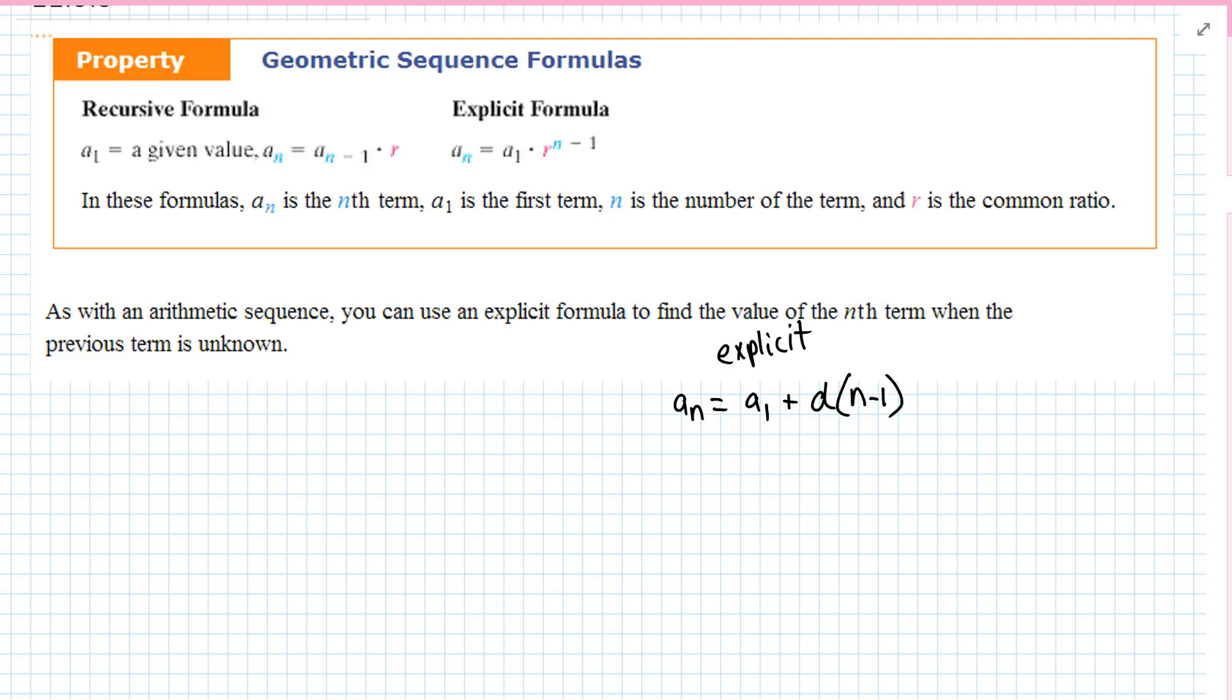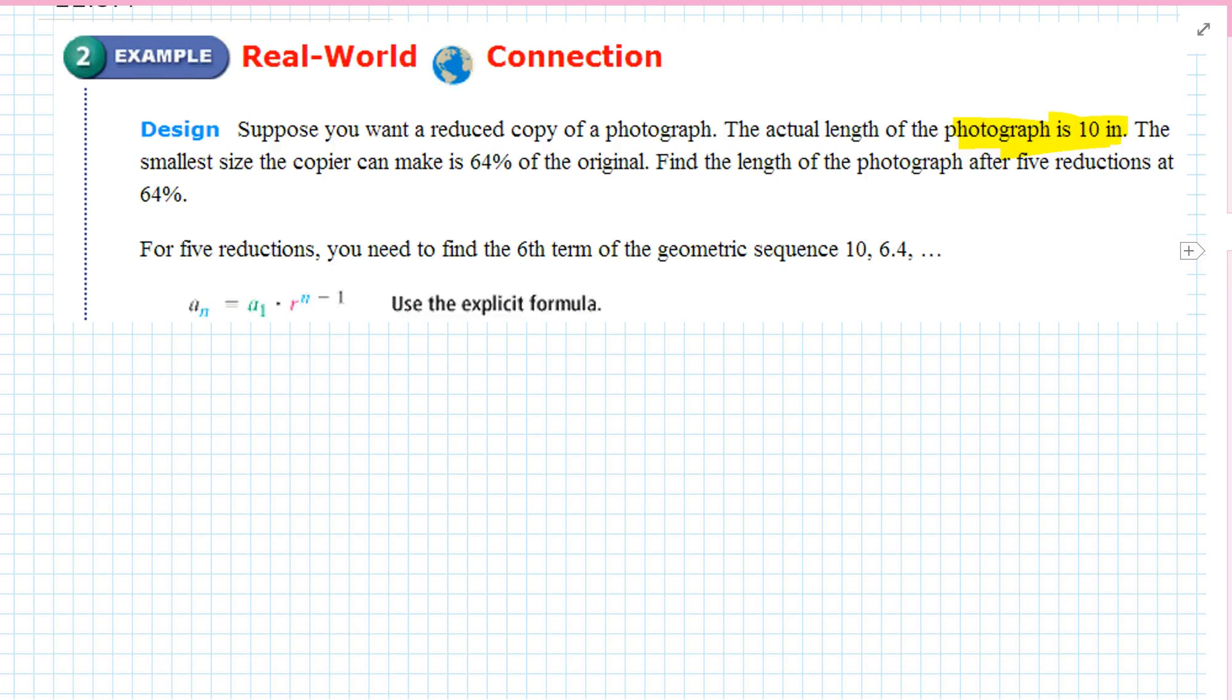Let's look at the formulas. The recursive formula: a1 equals a given value, aN equals aN minus 1 times R. So what this is saying is the current term is equal to the previous term times R. In explicit form, aN equals a1 times R to the N minus 1 power.